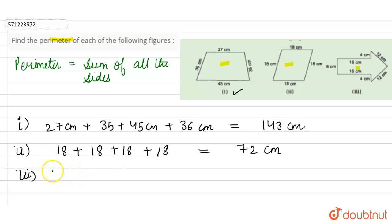Now for the third figure, we calculate 16 plus 16, then 4 plus 4 plus 12 plus 12. So 16 plus 16 is 32, plus 4 is 36, plus 4 is 40, plus 24 is 64. Therefore, 64 centimeters is the perimeter of the third figure.